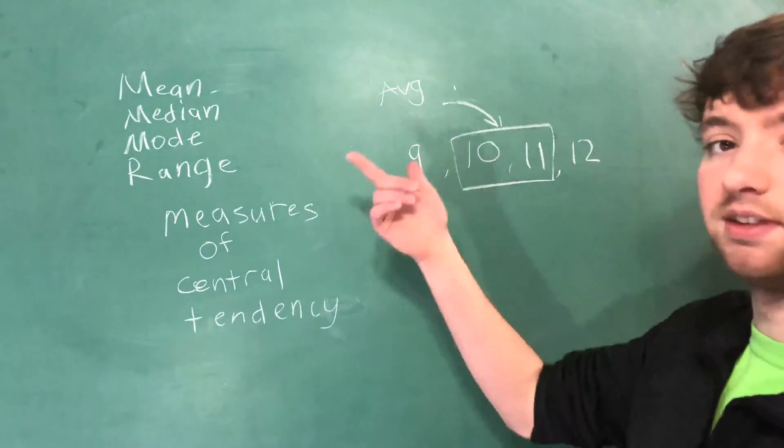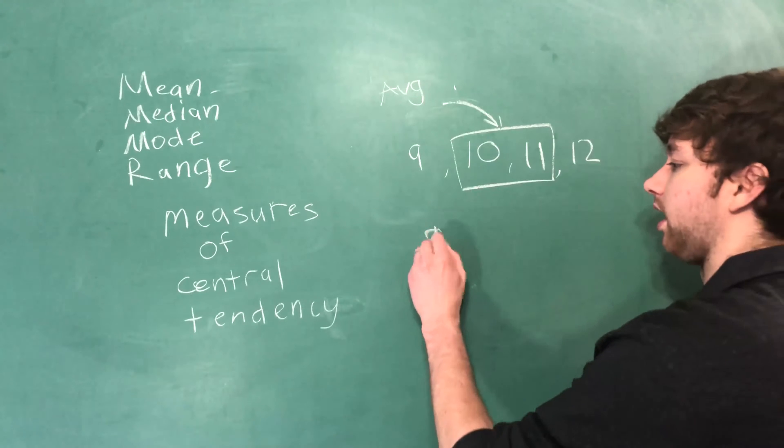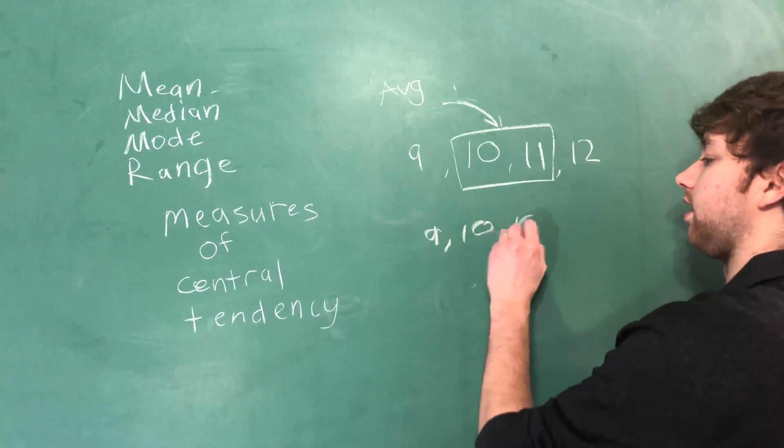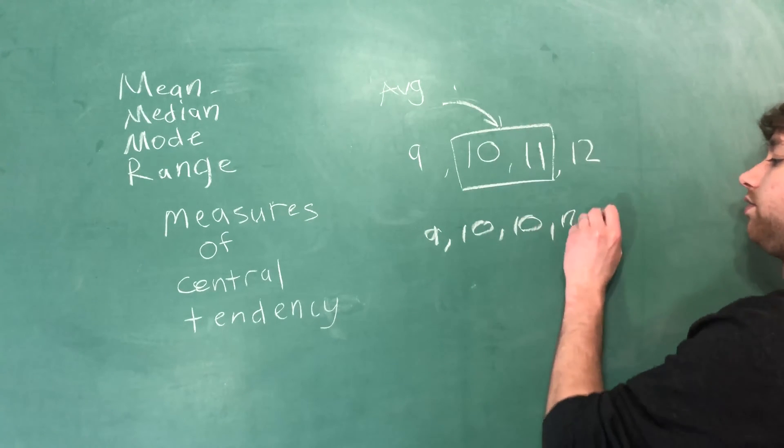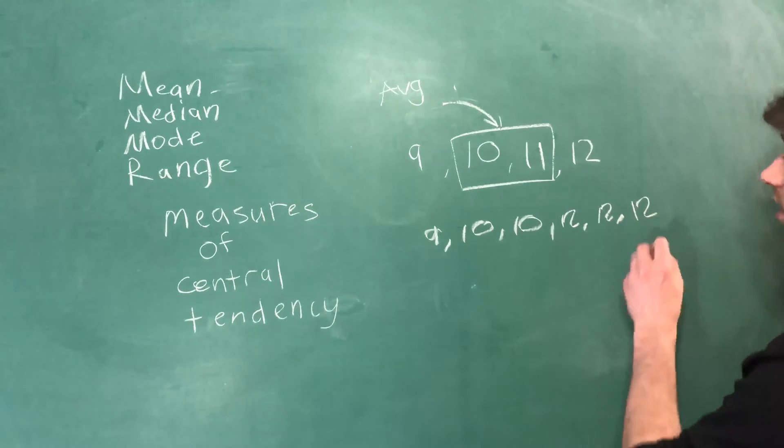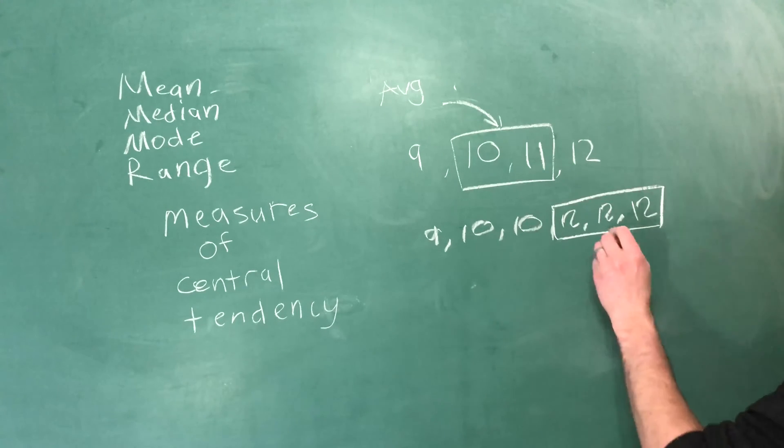The mode is the most. So if we had 9, 10, 10, 12, 12, 12, this 12 would be the most. So the mode would be 12.